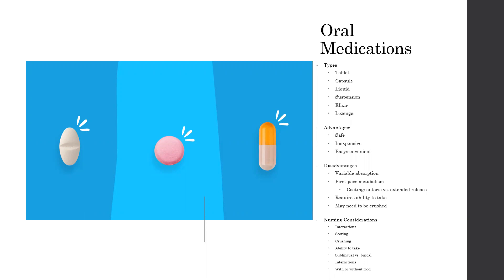The advantages to oral medications are that they're safe, inexpensive, and easy and convenient to use. The disadvantages are variable absorption, especially with first-pass metabolism. If a medication has high first-pass metabolism, it will often be coated with an enteric coating or created in an extended release form, so the coating can withstand gastric juices and break down at the intended site rather than in the stomach.